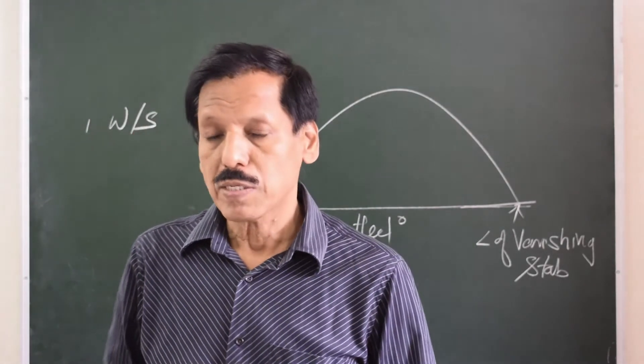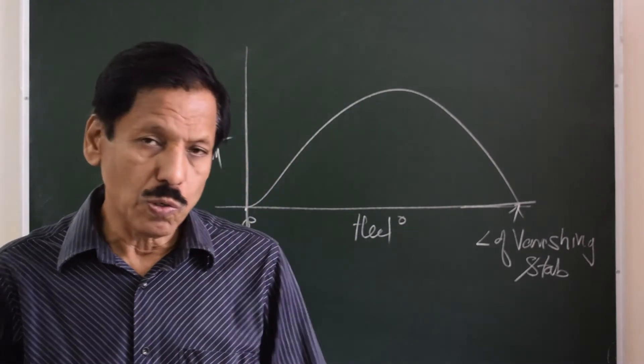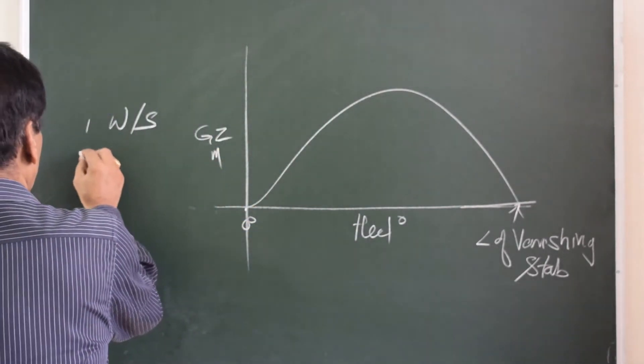That is GZ equals GM plus half BM tan squared theta, whole thing multiplied by sin theta, or number two...